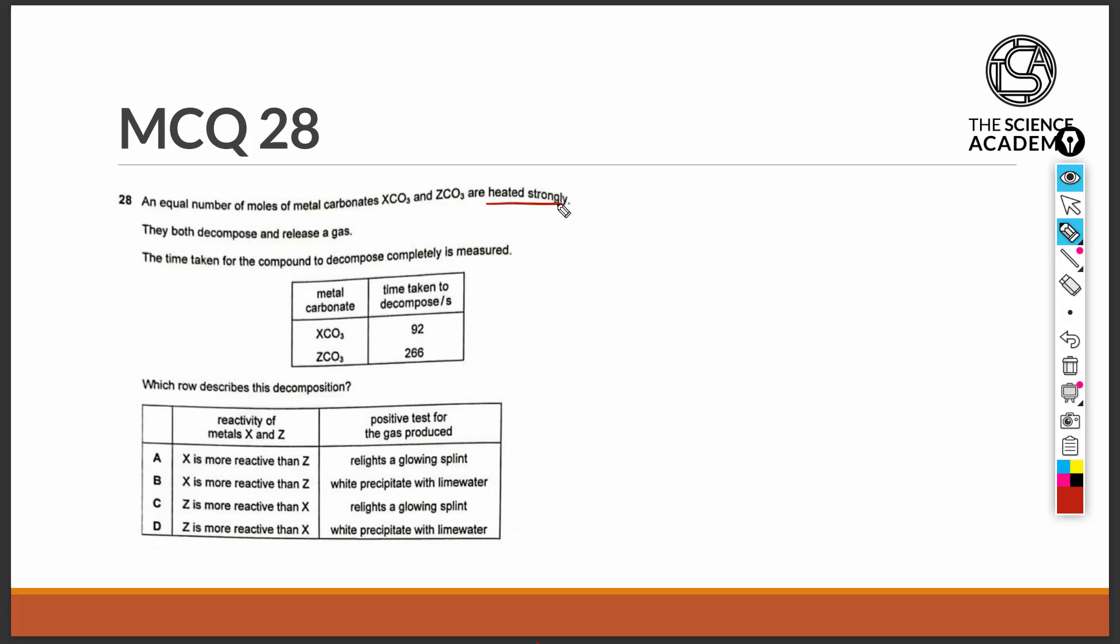So being heated strongly, the carbonates are subjected to thermal decomposition, where heat is the energy used to decompose the carbonates. And we know that metal carbonates that can be thermally decomposed will form products of the metal oxide and carbon dioxide.